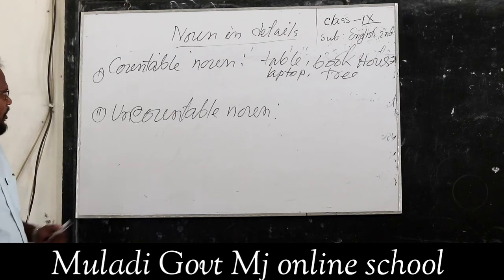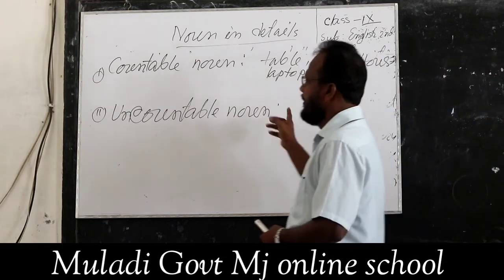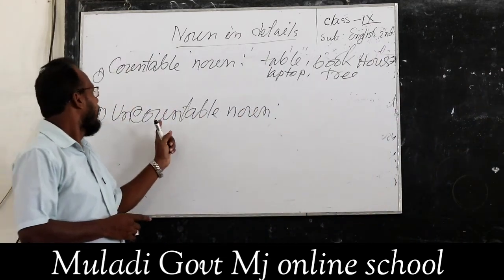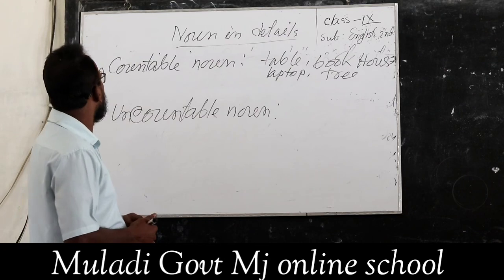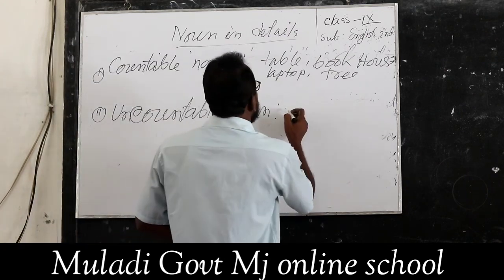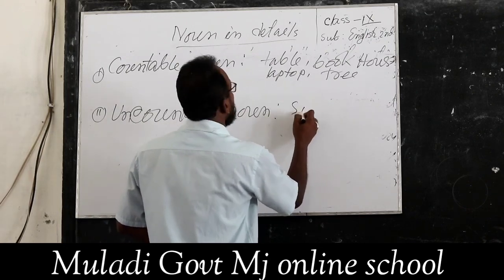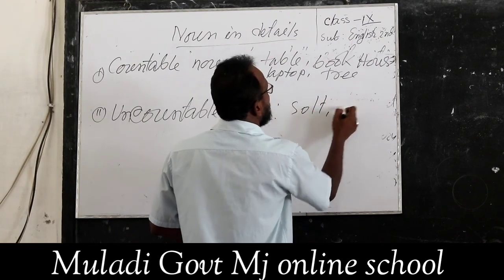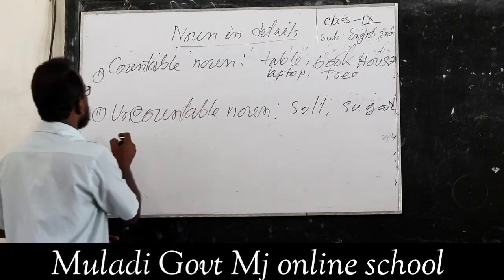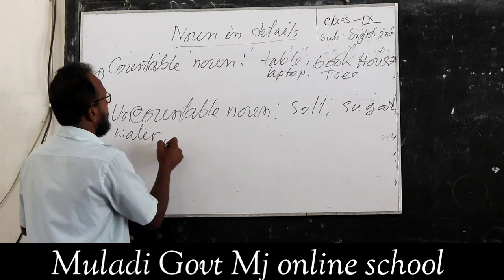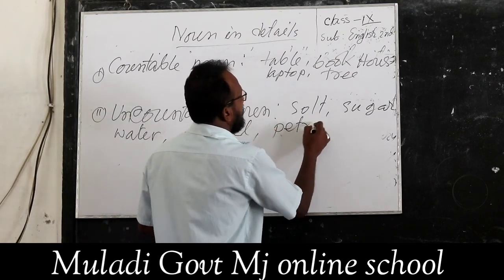What is uncountable noun? Uncountable noun is a noun that cannot be counted — it is only measurable. Such as salt, sugar, water, diesel, petrol, etc.